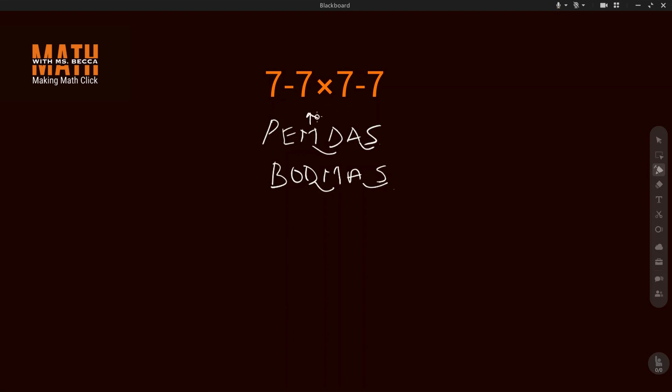That means we have to multiply before we subtract. So now we have 7 minus 7 times 7 minus 7. That means we have to perform the operation on this - we have to multiply first.